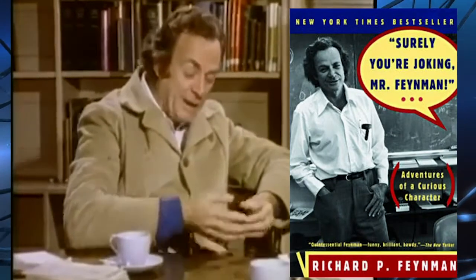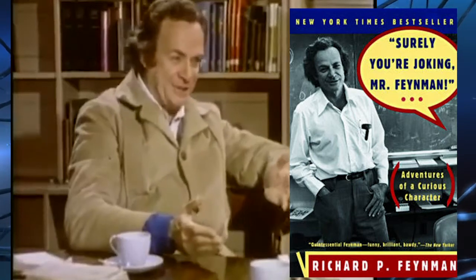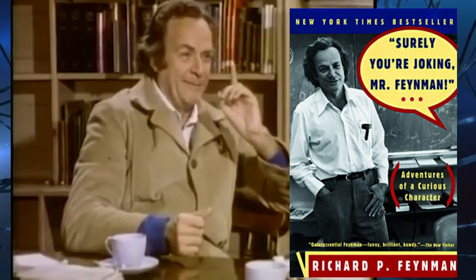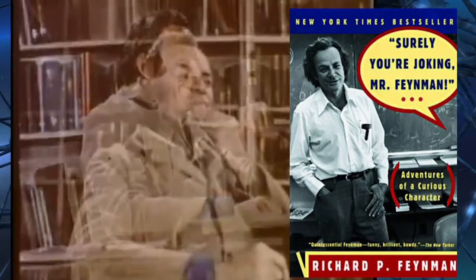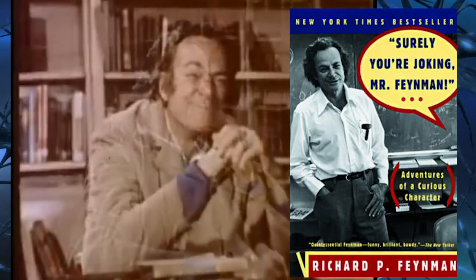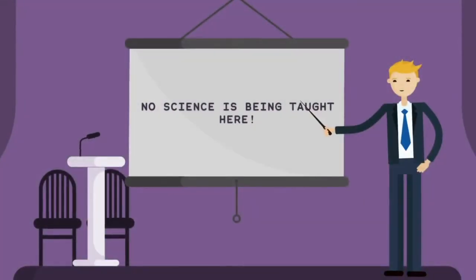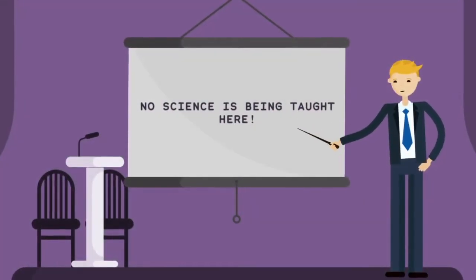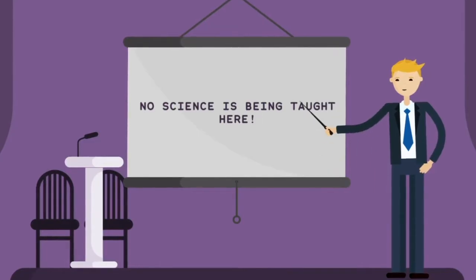In the book, Surely You're Joking Mr. Feynman, one of the stories was about him teaching in Brazil. This was in the 1950s, but what he said about the way physics was taught there is a problem that many schools still have. Feynman gave a talk at the end of the year in front of teachers and students and told them that no science was being taught at the school.